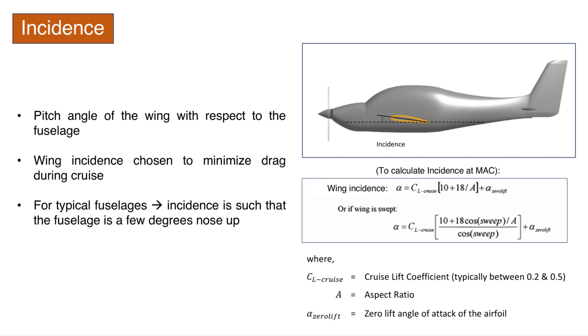A simplified version of wing theory can be used to estimate the wing incidence angle. For this, the cruise lift coefficient is needed, which can be found using this formula. Depending on whether the wing is unswept or swept, the formulae shown here can be used to estimate the wing incidence angle. The term alpha zero lift comes from the airfoil data. It should be noted that the incidence angle calculated here is the angle at the MAC. So, we need to lay out the wing such that we have the desired angle of incidence at the MAC, and the twist begins at the MAC, increasing inwards towards the root airfoil and decreasing outwards towards the tip airfoil.